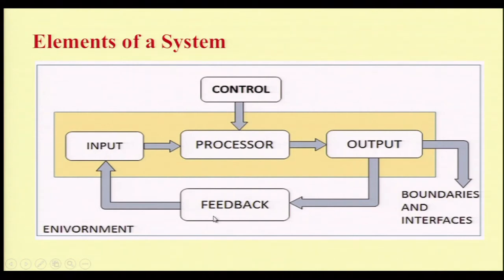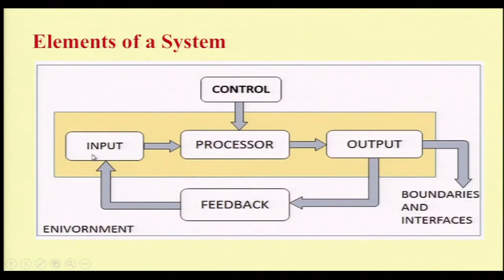If there is negative feedback, it goes back to the input and the process continues again. From the output, you have boundaries and interfaces. Boundaries determine the scope of the system — how the system works and what its scope is. Interfaces speak about what sort of connections are being connected with your system. Finally, the environment describes in which environment your particular system works — that is also part of the elements of a system.